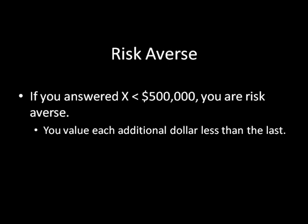Now, if you answered X is less than $500,000, you're something we call risk averse. That means you value each additional dollar less than the last. I personally answered X equals $300,000. The idea here is that having $300,000 is just going to make me really happy. Having $300,000 guaranteed will allow me to go buy a nice house and that will take me a lot further in life than getting $0 would. And while getting a million dollars would get me even further, that extra space further that it would get me — I'd be able to buy a nicer house — a nicer house is great, but I would rather just be happy with the security of being able to buy some sort of house with my $300,000. So that's sort of why I answered X equals $300,000. I suspect most of you are going to fall into this category.